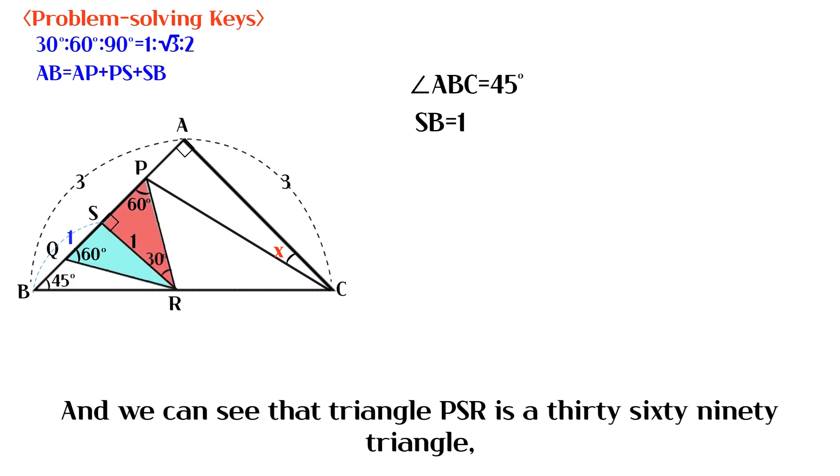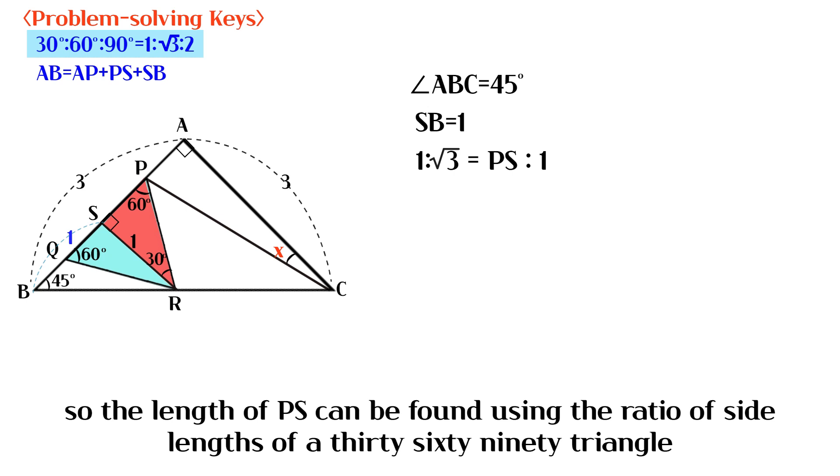And we can see that triangle PSR is a 30-60-90 triangle. So the length of PS can be found using the ratio of side lengths of a 30-60-90 triangle.